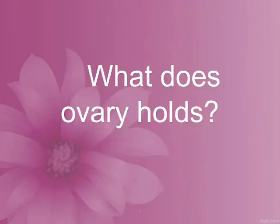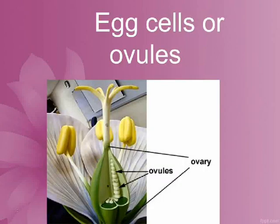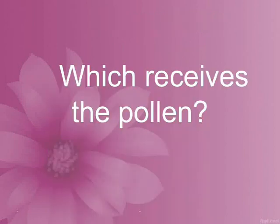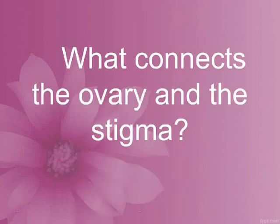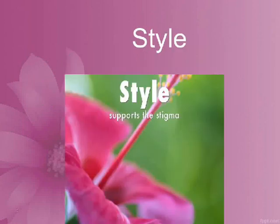What does the ovary hold? Egg cells or ovules. Which receives the pollen? Stigma. What connects the ovary and the stigma? Style.